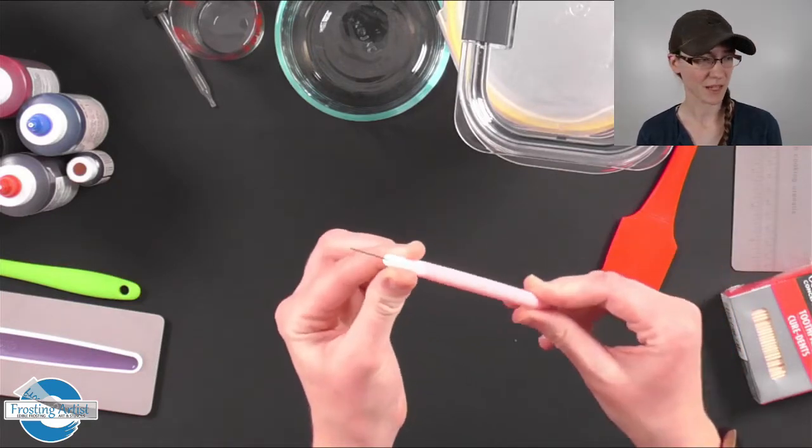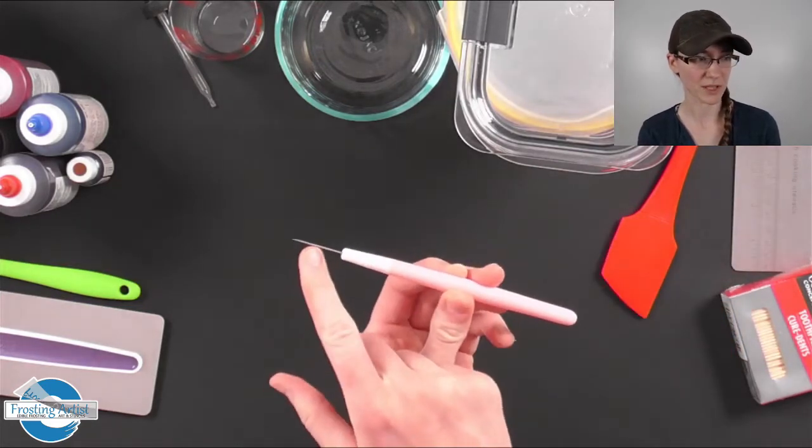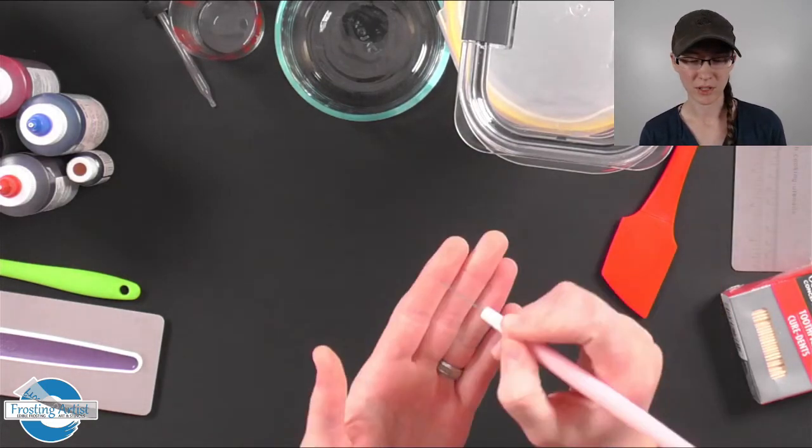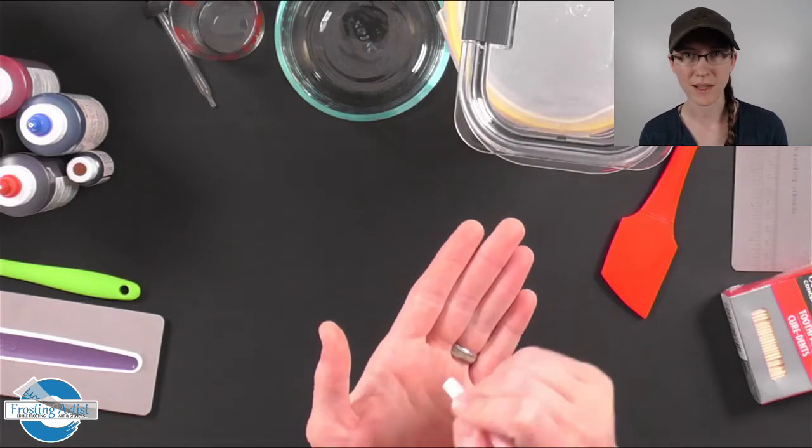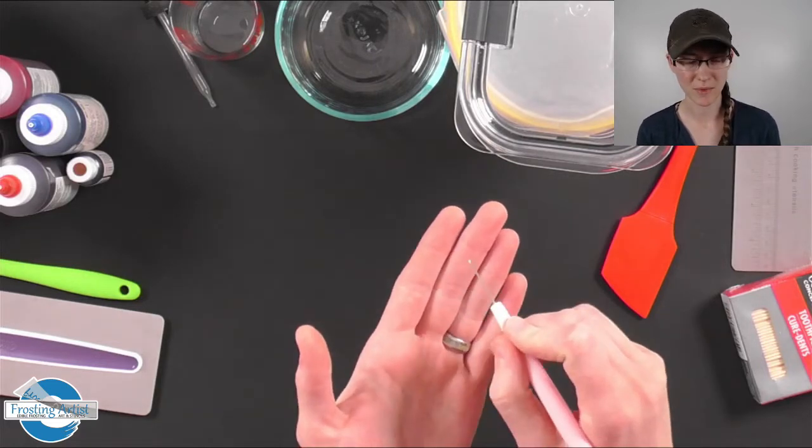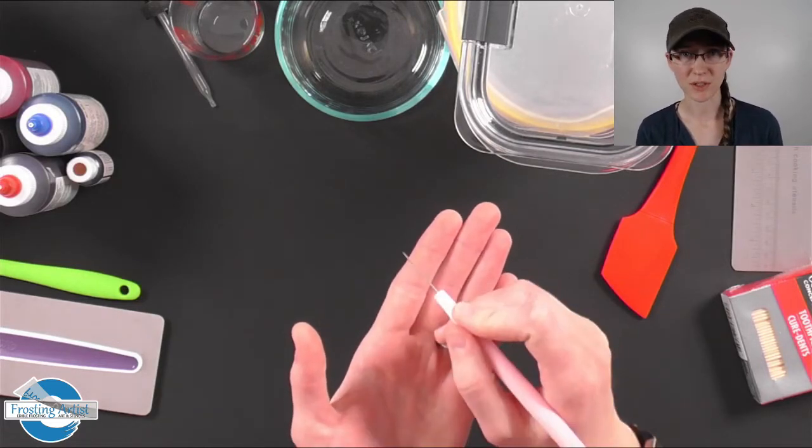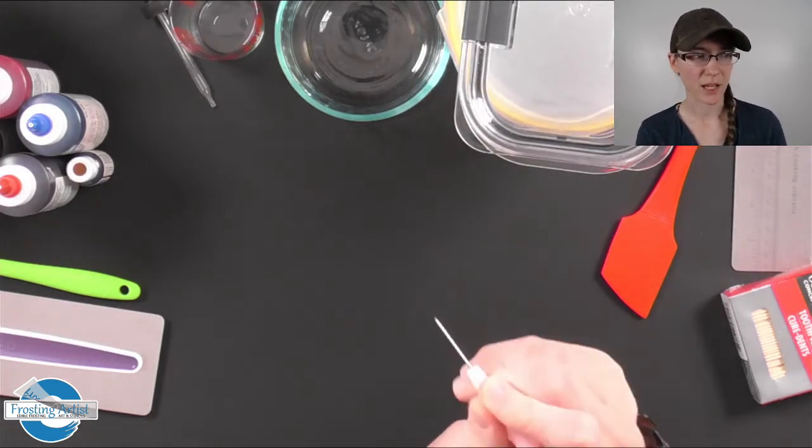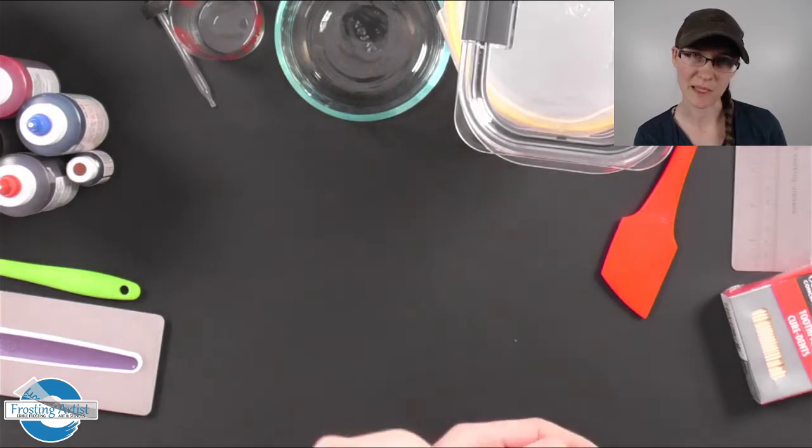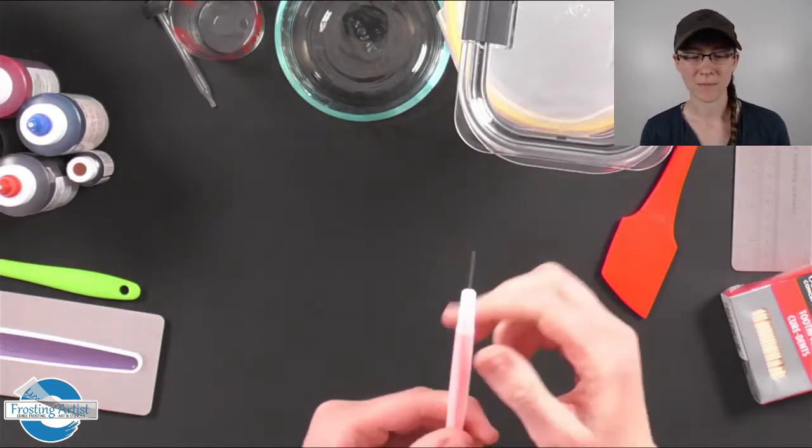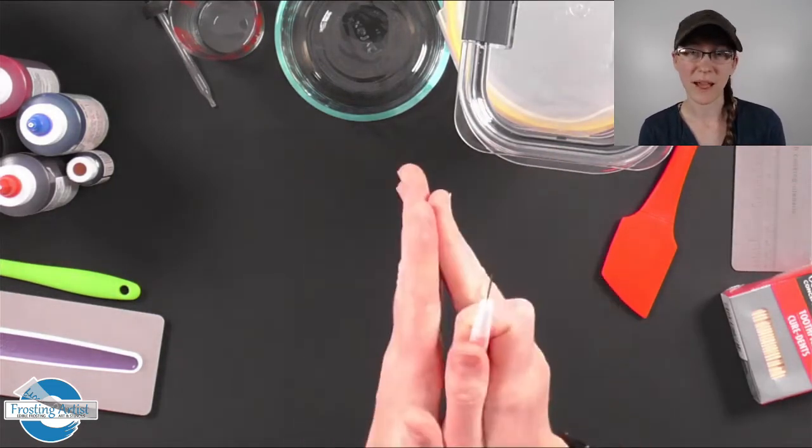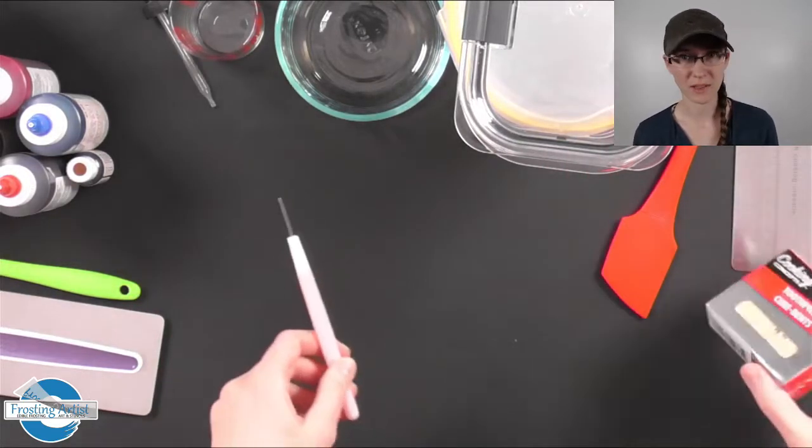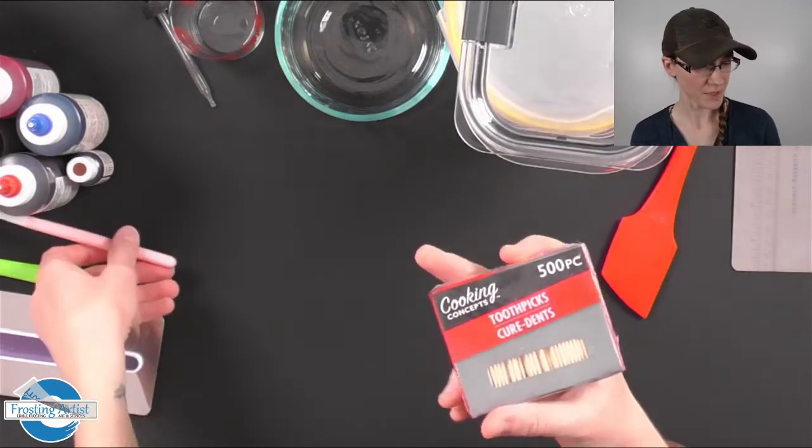Another thing, this one's just a cookie scribe. You will want to have something that you can scrape gently with if you have finer details on your stencils. Sometimes the icing will push underneath those fine details and you can go back through with your scribe and you can scrape along those lines that way it pushes the icing away.